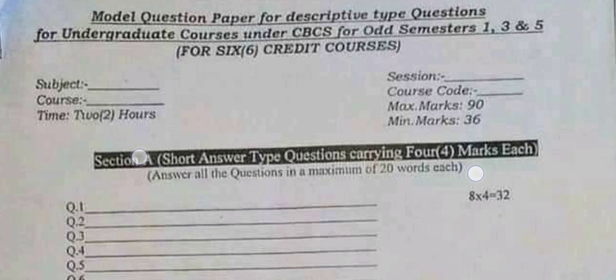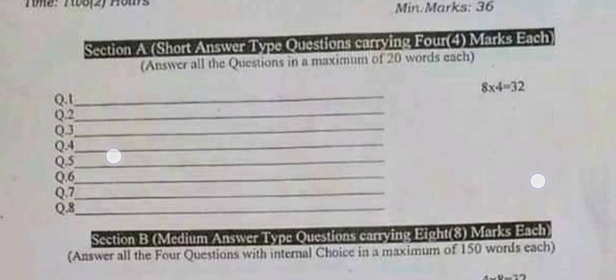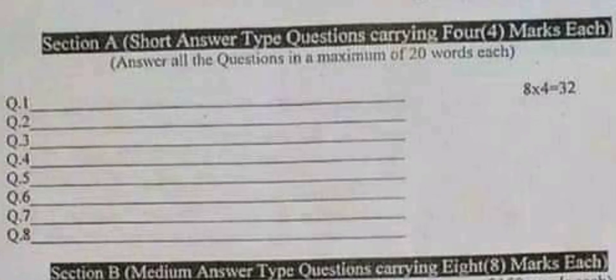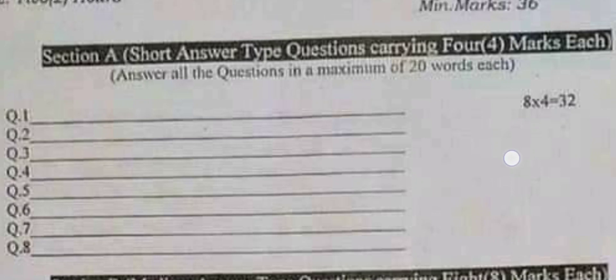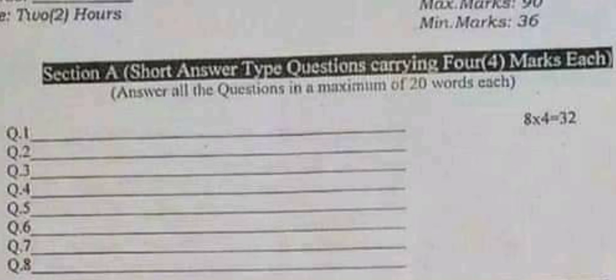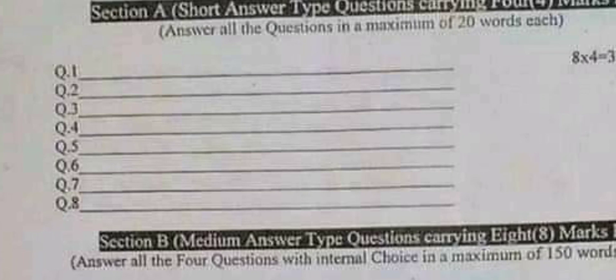Now let me show you how the question paper will look. First of all, Section A: short answer type questions carrying four marks each. There will be eight questions, so that means it will have 32 marks in total. Answer all the questions with a maximum of 20 words each, though it is not compulsory to write exactly 20 words.